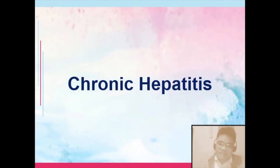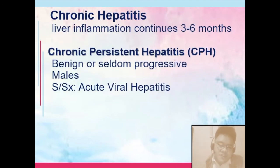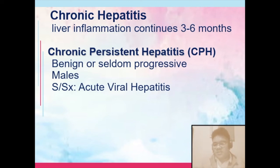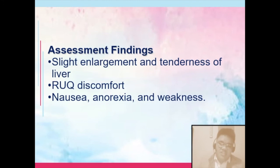Let's talk about chronic hepatitis — liver inflammation that continues for three to six months. Chronic persistent hepatitis is benign and seldom progressive, commonly occurs among males, and the signs and symptoms are the same as acute viral hepatitis. Assessment findings include slight enlargement and tenderness of the liver, right upper quadrant discomfort, and still your nausea, anorexia, and weakness.